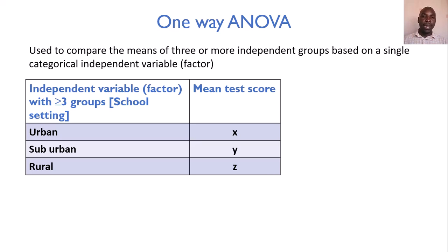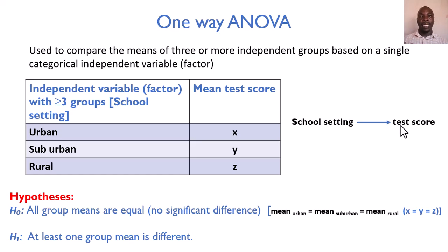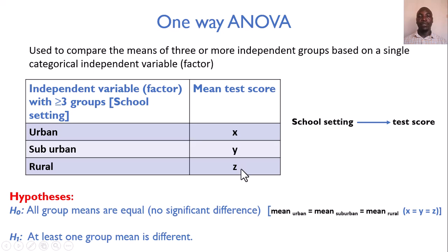We calculate the mean scores of these students per category — the mean for urban, for sub-urban, and for rural — asking: does school setting influence the test score someone gets? The null hypothesis states that all group means are equal; there is no significant difference when comparing means of students from urban, sub-urban, and rural schools. We would expect x to equal y, and y to equal z, for there to be no statistically significant difference.